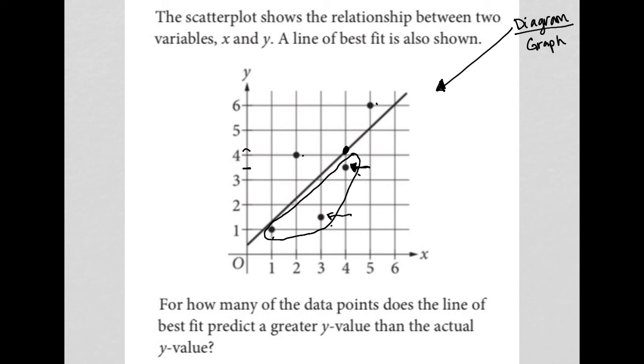So that happens there, here and here. So there are three data points for which the line of best fit predicts a greater Y value than the actual Y value.